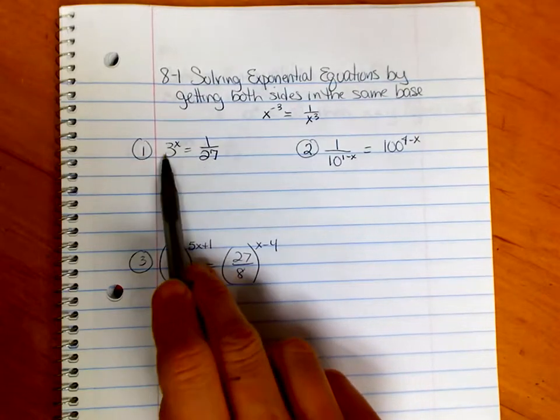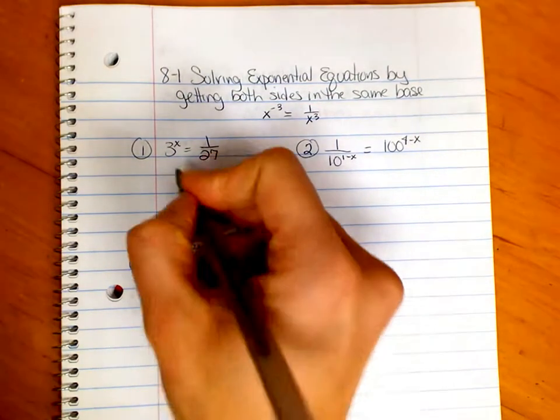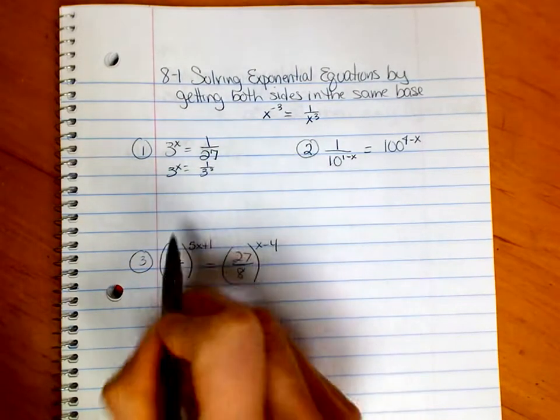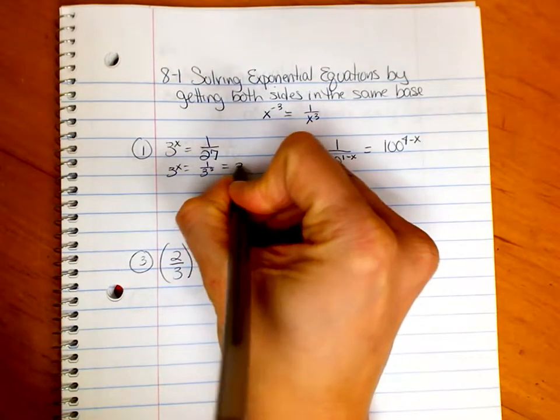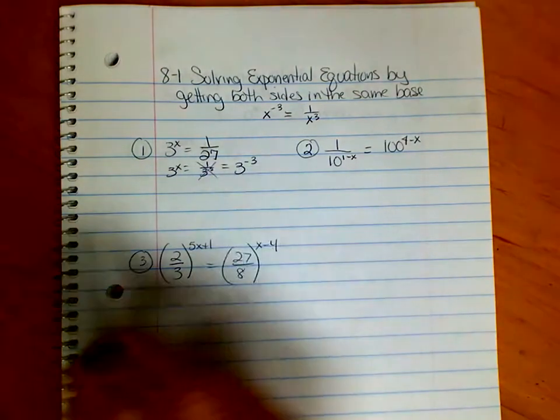So for example, in this one, I know that 27 is 3 cubed. So I get 3 to the x equals 1 over 3 cubed. But I can't have it in the denominator. I need to move it up. Well, if I move it up, I have to make that a negative exponent.